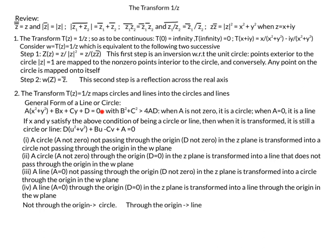We have four cases: a circle not passing through the origin (a not zero, d not zero) in the z plane is transformed into a circle not passing through the origin in the w plane. A circle through the origin (a not zero, d equals zero) is transformed into a line not passing through the origin. A line not passing through the origin (a equals zero, d not zero) is transformed into a circle through the origin. And a line through the origin is transformed into a line through the origin in the w plane.